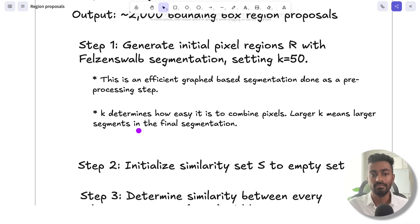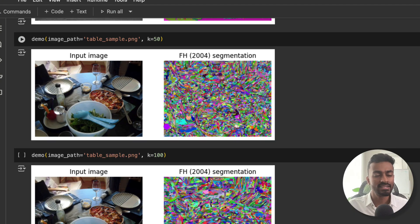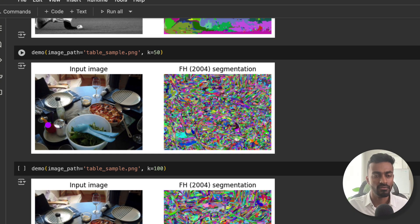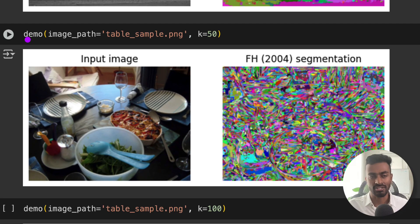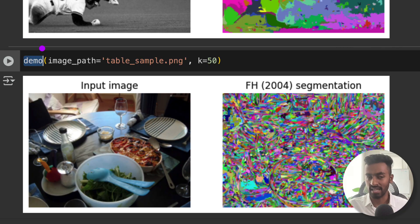Larger the K means that larger segments will be there in the final segmentation. So to illustrate what this actually looks like, this demo is essentially going to call the segmentation algorithm, where we pass in this image, and let's just say this K value is going to be 50. So with an input image, you can create all of these segments.